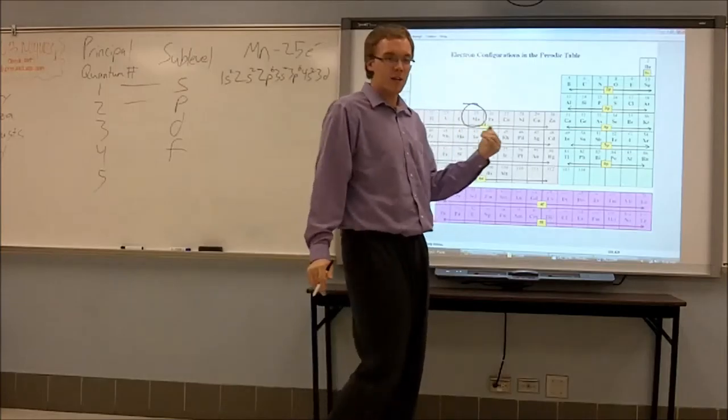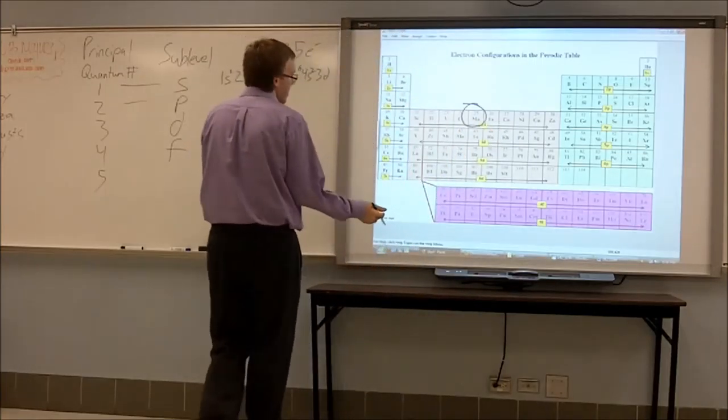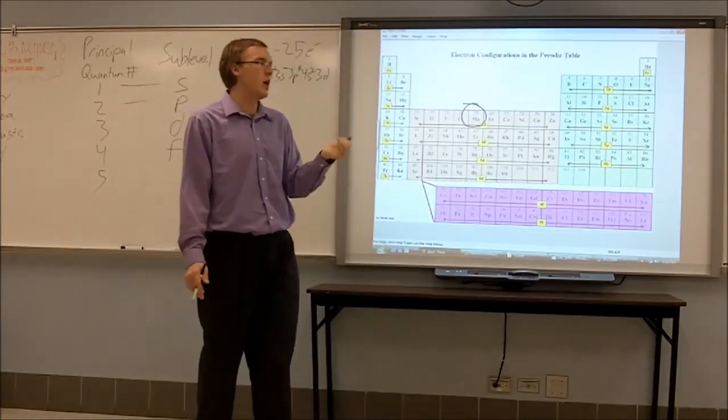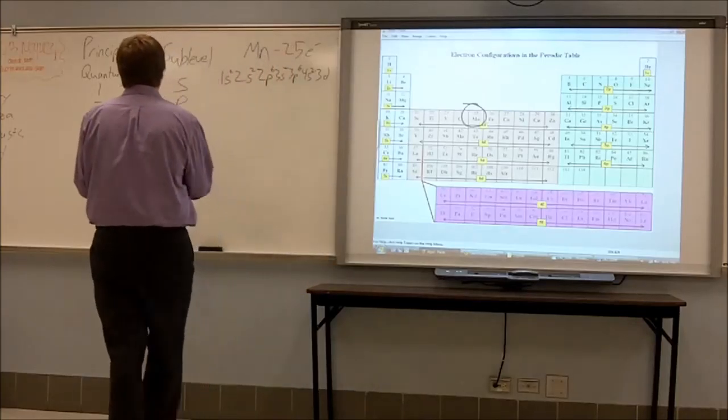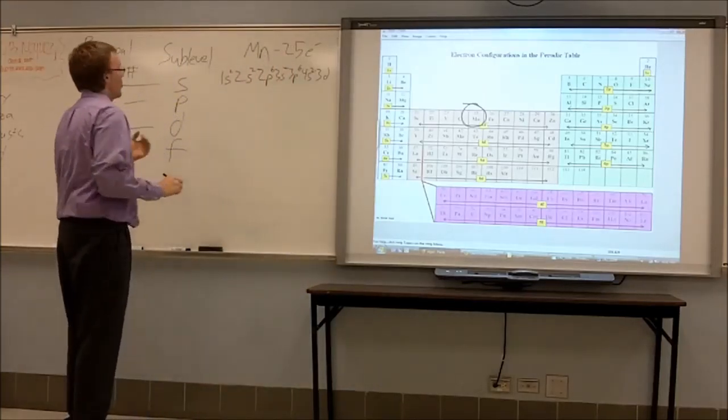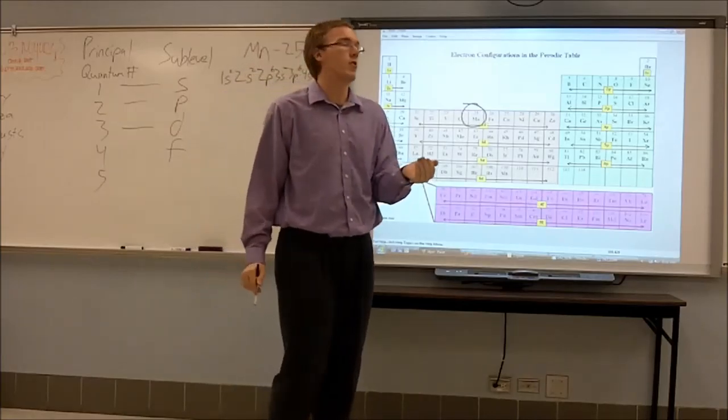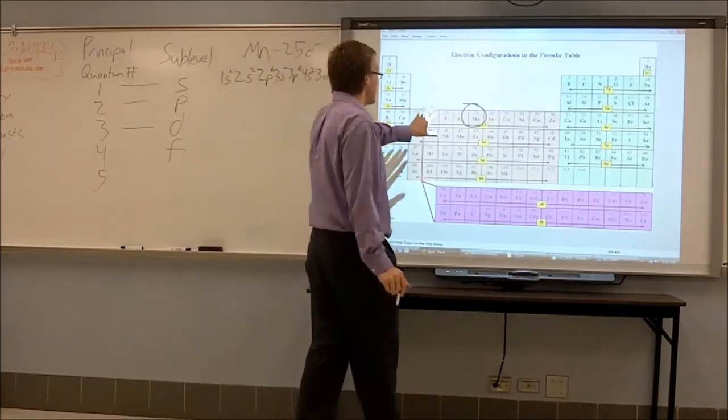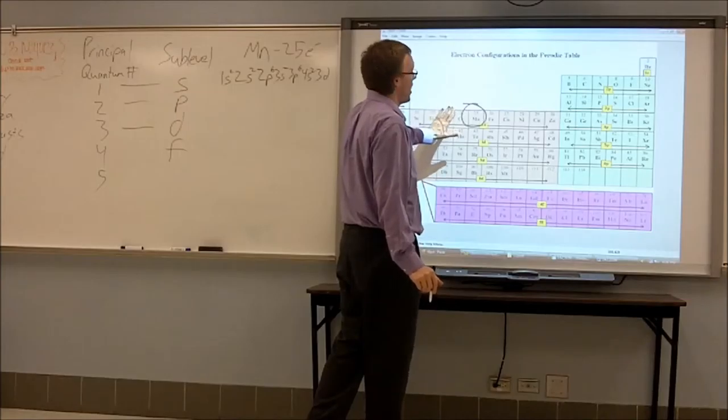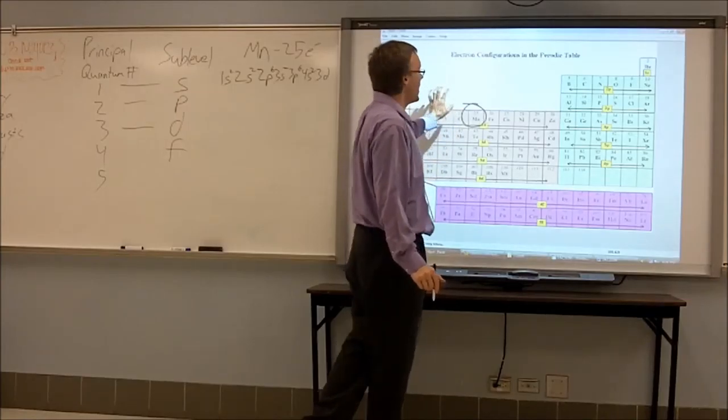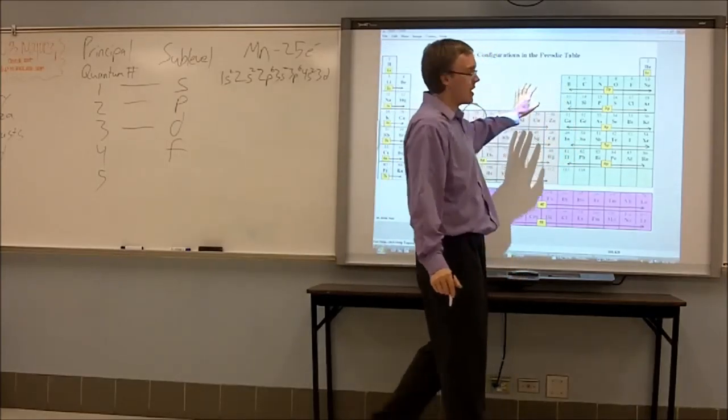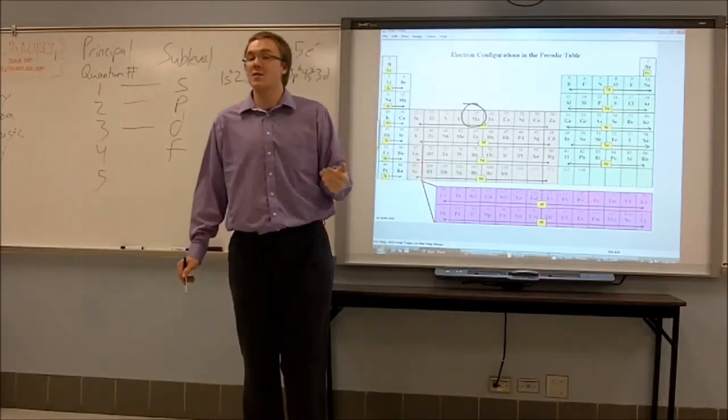The problem with that, that I found, is that it doesn't seem to make sense. Why is it three D instead of four D? We move down four rows, why isn't it four D? Well the reason is just like the P group. For each sub-level that we move down, we move down one principal quantum number from the previous sub-level.